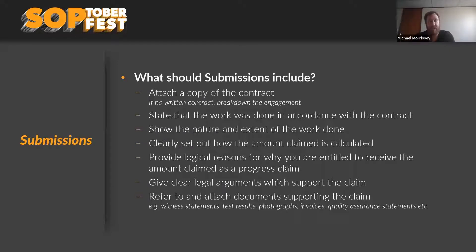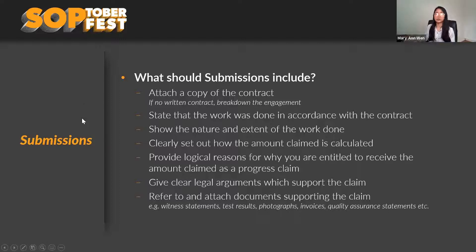It's really important — we've still seen adjudication applications put in where the person hasn't even stated they've done the works. An adjudicator, irrespective of the merits of the adjudication response, still has to satisfy themselves that the construction work or related goods and services were done or supplied. In the absence of evidence for that, an adjudicator may simply say 'I can see you've put in a claim but I can't see that you've done that work.' Those primary documents — photographs, time-lapse material showing incremental change on site, delivery records — become critical.